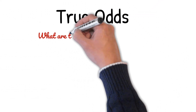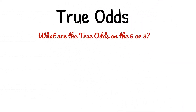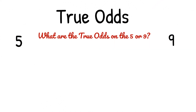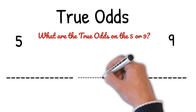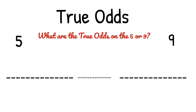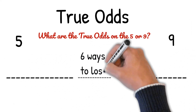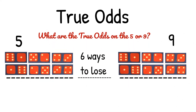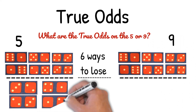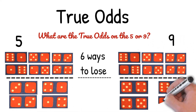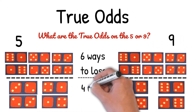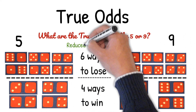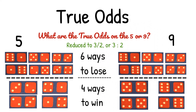What are the true odds on the 5 or 9? The true odds on the 5 or 9 are 6 ways to lose, 4 ways to win, which reduces to 3 to 2, or 3 to 2 as a ratio.